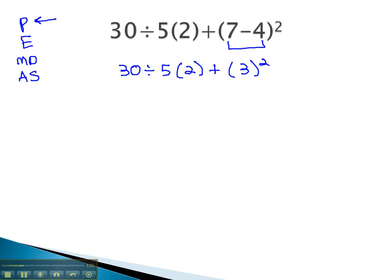Now that we've simplified inside the parentheses, we're ready for the second step, the exponents. There is an exponent on the 3, we have 3 squared. So, we can rewrite everything else exactly like it is, doing only one step. 30 divided by 5 times 2, plus the 3 squared is 9.